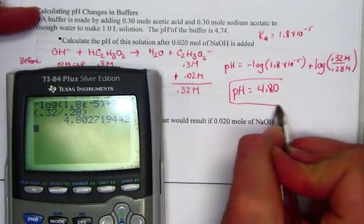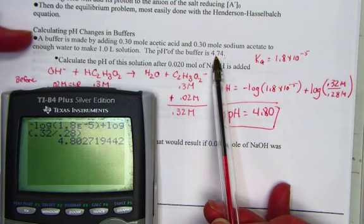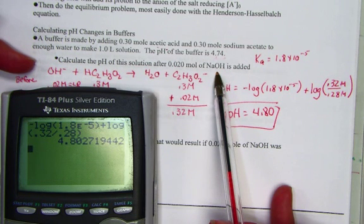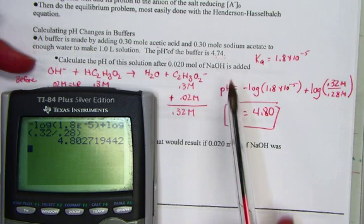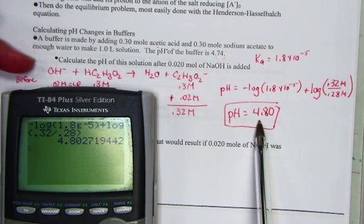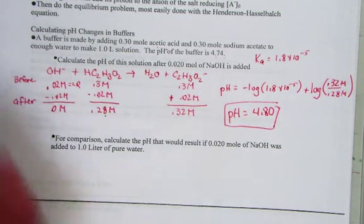So what have we concluded? We started with a pH of 4.74 and added a very strong base. We should expect the pH to shoot straight up, but because of the buffering capacity, it went up only a little from 4.74 to 4.80. So we are well within the buffering capacity of this particular solution.